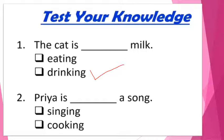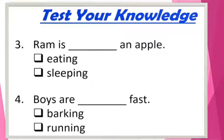The options are cooking or singing. Now tell me, what is Priya doing? Priya is singing a song. The next one is: Ram is dash an apple — eating or sleeping — now you have to decide. And the last one: boys are dash fast — barking or running. Now you have to answer these on your own.